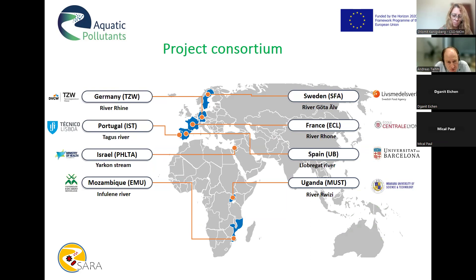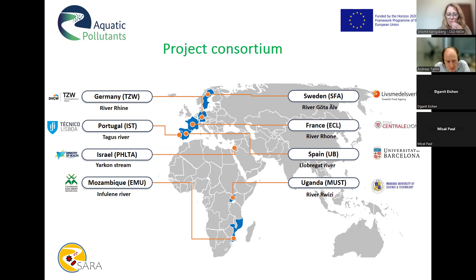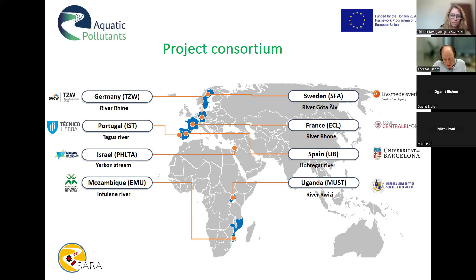The structure of the project is shown here with different work packages focusing on different types of pathogens. Our consortium consists of eight partners representing different climate areas. Starting in the north, we have partners from Sweden, then our group in Germany, a group in France, in Spain and Portugal, a partner from Israel, and two partners from Africa — Uganda in the central part and Mozambique in the south.